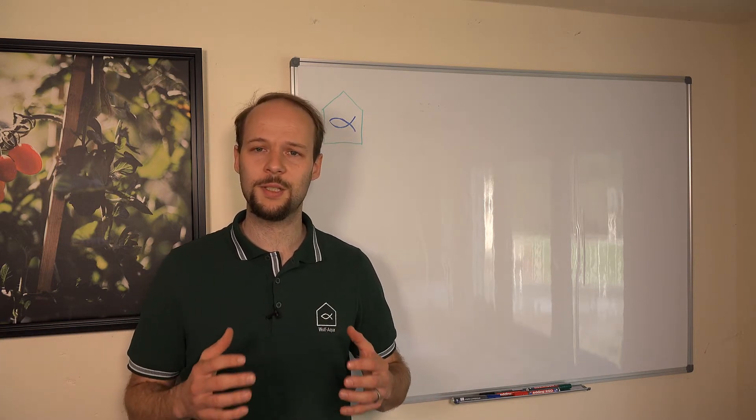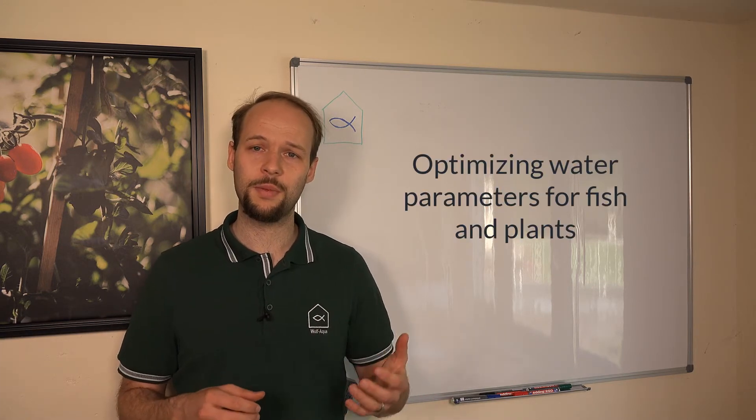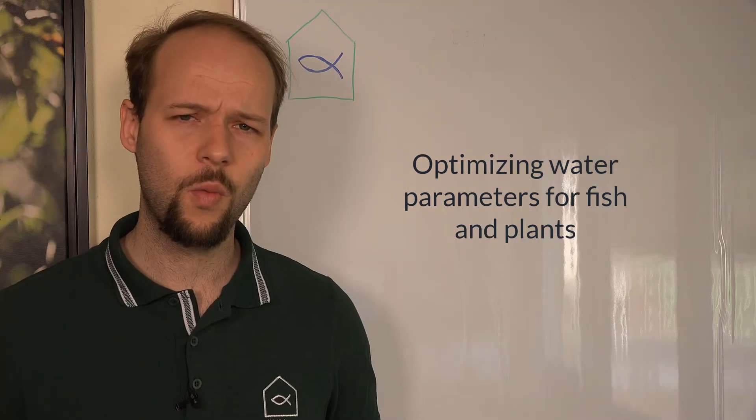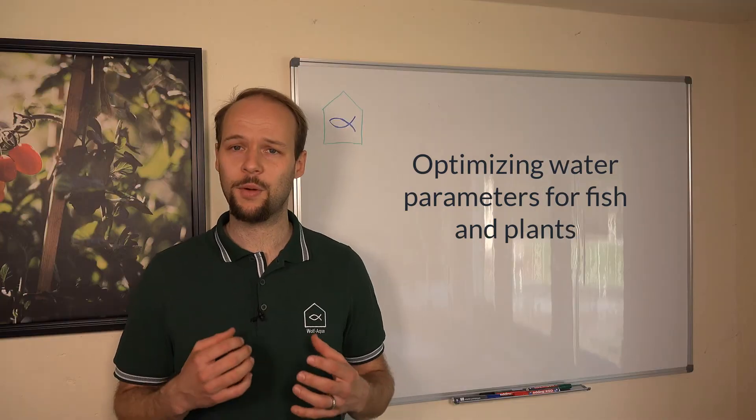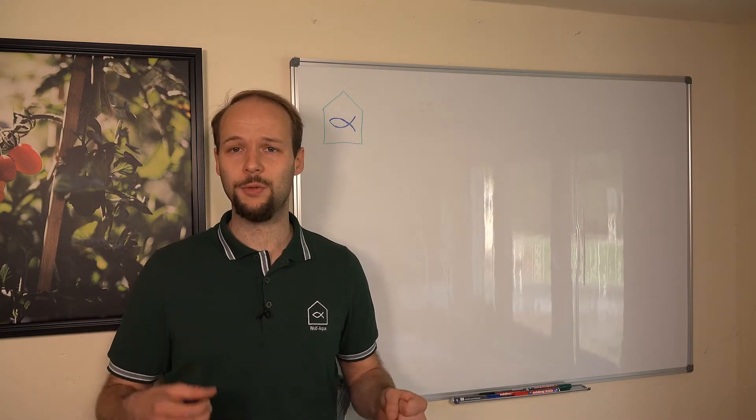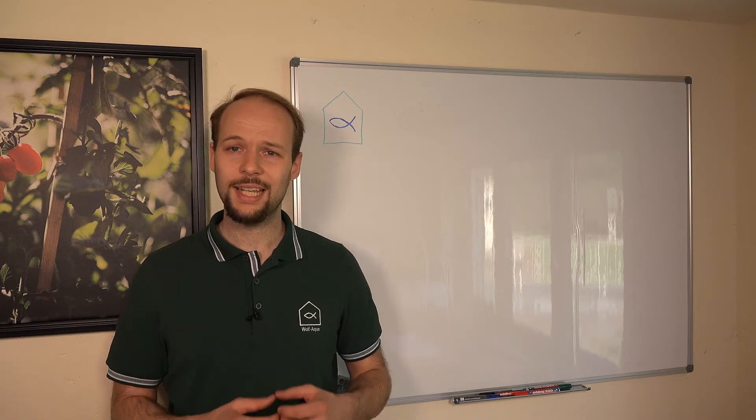Another reason to split the systems is because you can optimize the water parameters for both styles of your aquaponics system. So for the fish and for your plants. So what do I mean by that? In a classic aquaponics system, you always have to make a tradeoff between clean water for your fish and nutrient-rich water for your plants, at least to a certain degree.